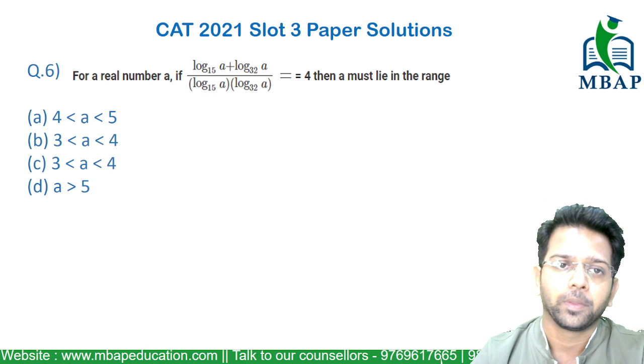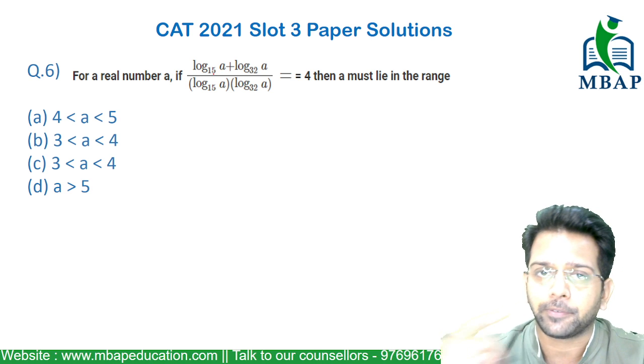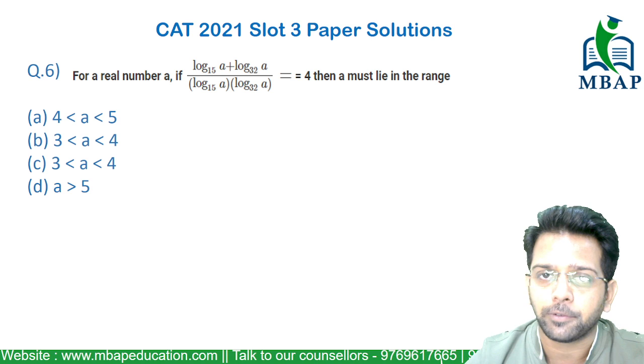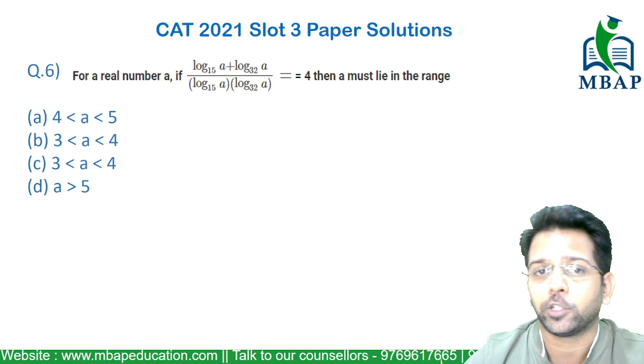Let's have a look at the next question now. The question says for all real numbers a, log a to the base 15 plus log a to the base 32 divided by log a to the base 15 into log a to the base 32 is equal to 4. Then the value of a must lie in which range?